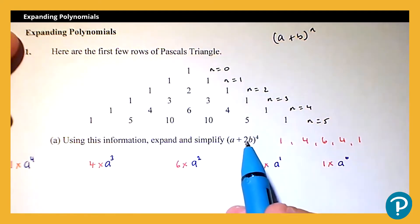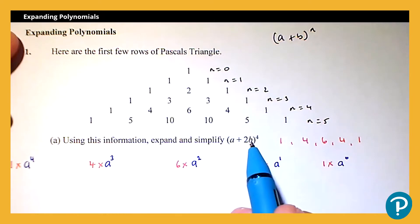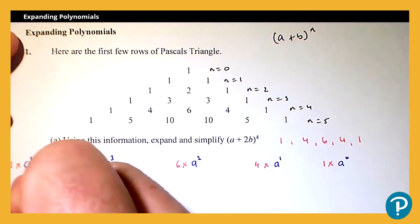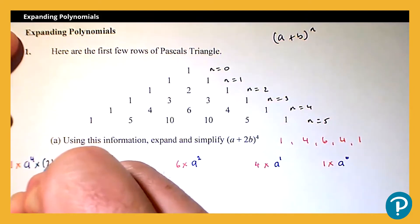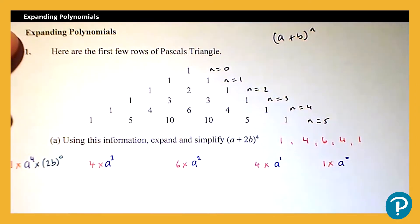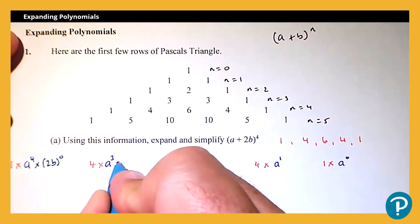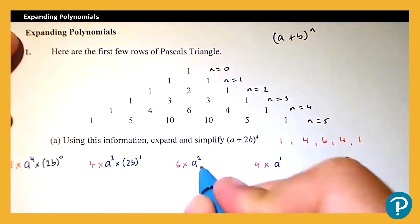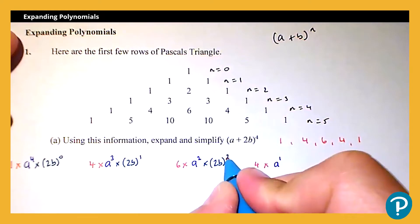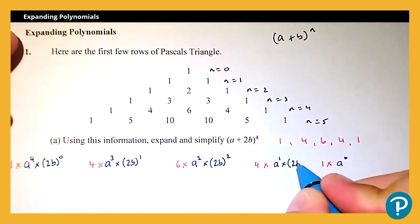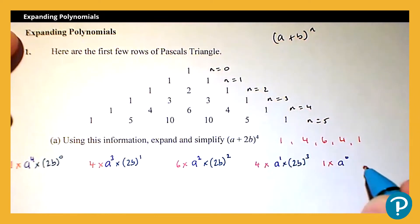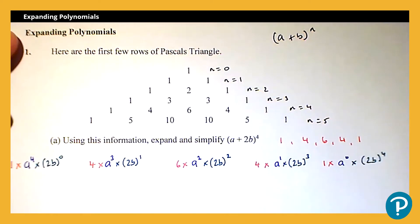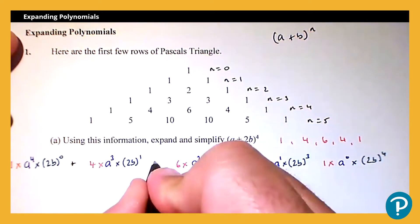For the second term in the expansion, which is 2b, the index numbers work in the opposite direction — they start at zero and increase up to four. So we have (2b) to the power 0, (2b) to the power 1, (2b) to the power 2, (2b) to the power 3, and (2b) to the power 4. It's important that 2b goes in a bracket. We then add all these expressions together.